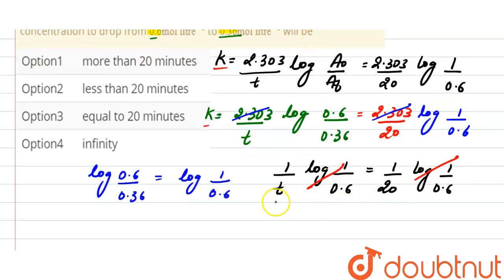So here the values of logs are equal, so they'll cancel out each other. And as we clearly see, the time required for the concentration to drop is equal to 20 minutes, and the correct option here will be that time required is equal to 20 minutes.